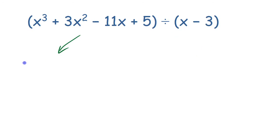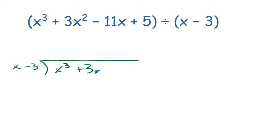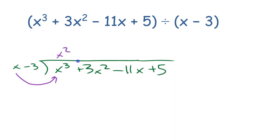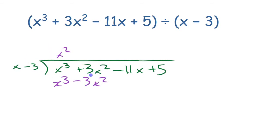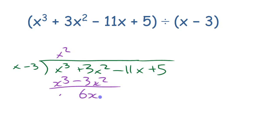When you do long division, you put your divisor here and write the polynomial: x cubed plus 3x squared minus 11x plus 5. You look at those leading terms — x into x cubed goes x squared times — then multiply back to get x cubed minus 3x squared. You're subtracting, so 3 take away negative 3 gives you 6x squared. Bring down the next term.